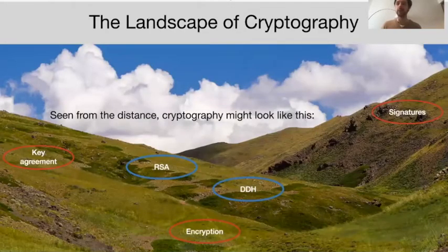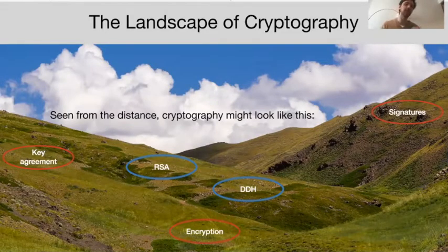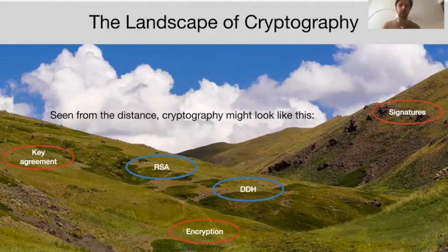Seen from the distance, the landscape of cryptography might look like this. We have a few islands of important primitives, such as key agreement, encryption, signatures, and a bunch of assumptions that are used to build them, such as RSA and DDH.